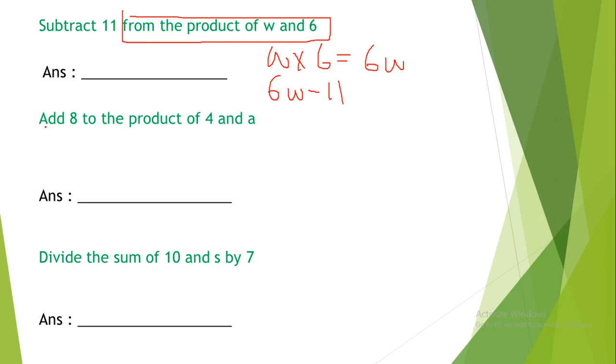Add 8 to the product of 4 and a. The product of 4 and a is 4 times a equals 4a. Add 8 to 4a. So the answer is 4a plus 8, or you can write it as 8 plus 4a.